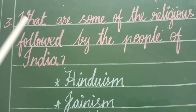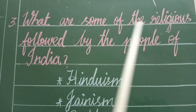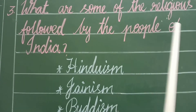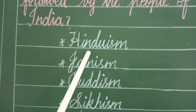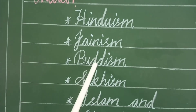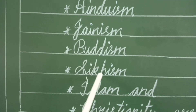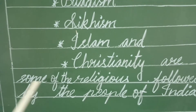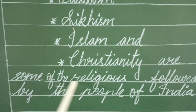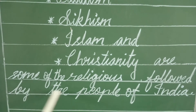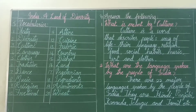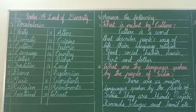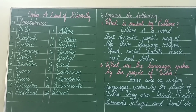Third question: What are some of the religions followed by the people of India? Hinduism, Jainism, Buddhism, Sikhism, Islam and Christianity are some of the religions followed by the people of India. Dear students, write this in your pamphlet with neat handwriting. Thank you.